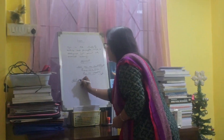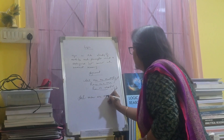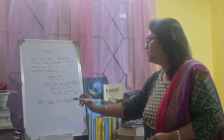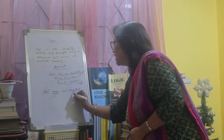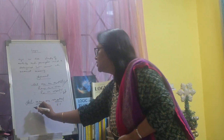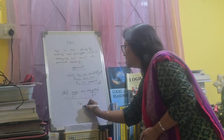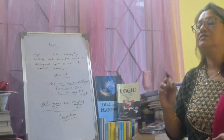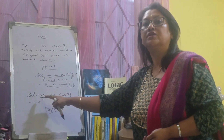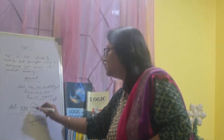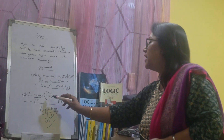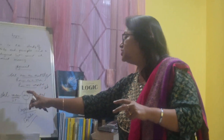If we write 'All men are mortal,' the words 'men' and 'mortal' are called terms. 'Men' is the subject term and 'mortal' is the predicate term. This whole sentence is called a proposition. A proposition is the statement of a certain relation between two terms — the subject term and the predicate term. The word 'are' is called the copula, which expresses a relation between the subject and the predicate.